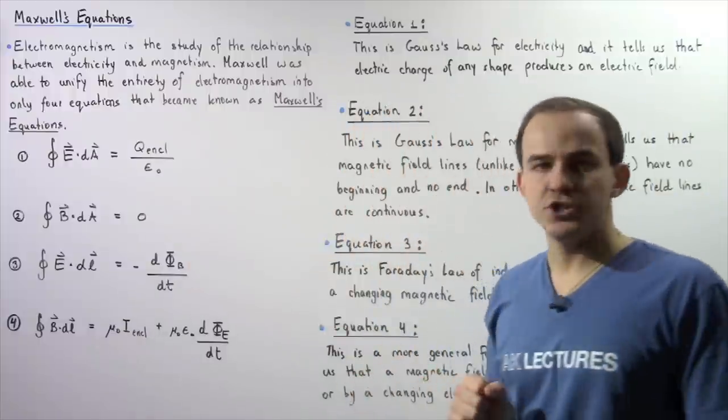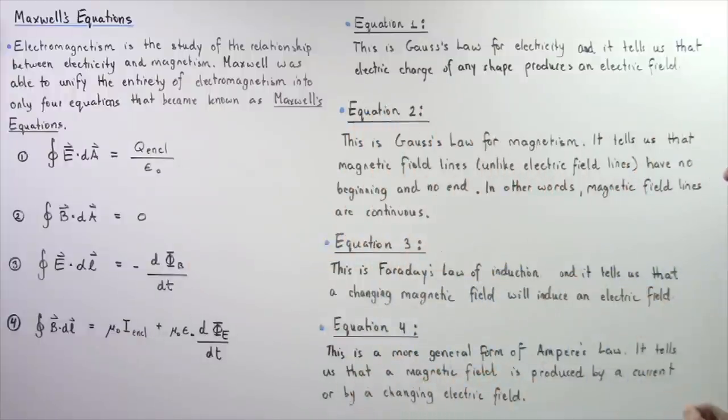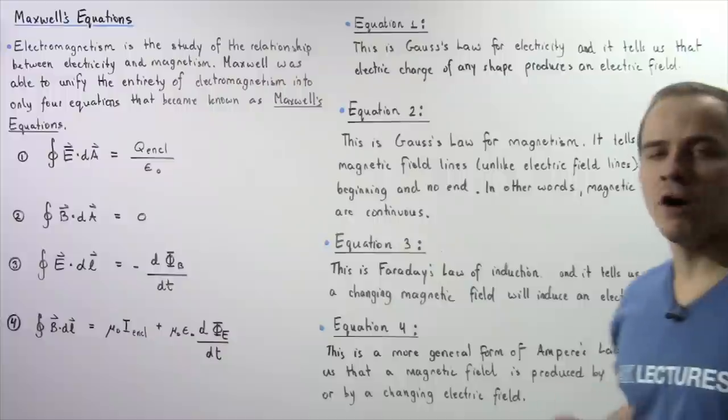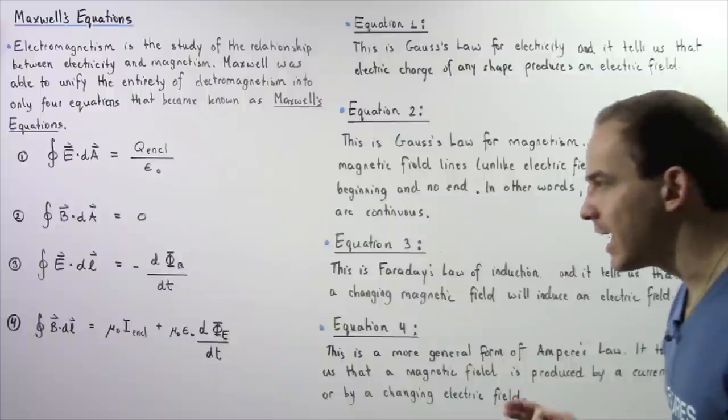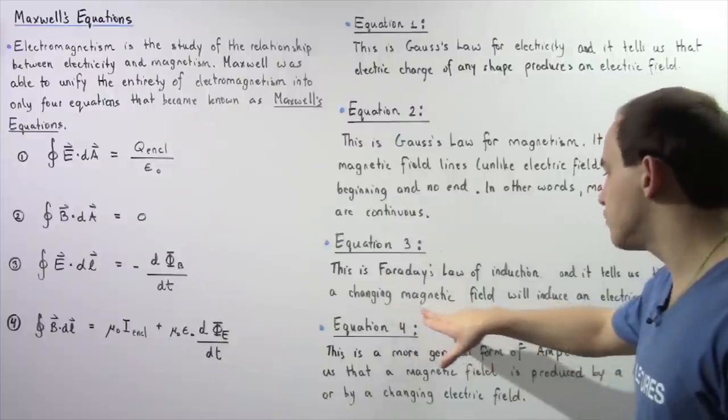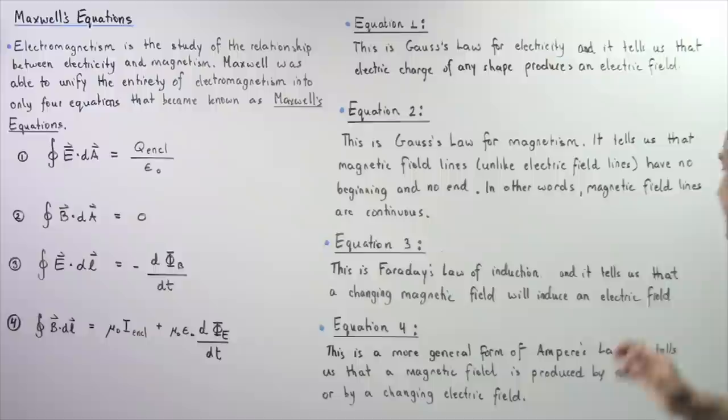Let's move on to equation three. Equation three is known as Faraday's law of electromagnetic induction and it tells us that a changing magnetic flux as a result of a changing magnetic field will induce an electric field as